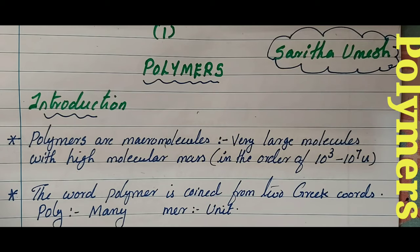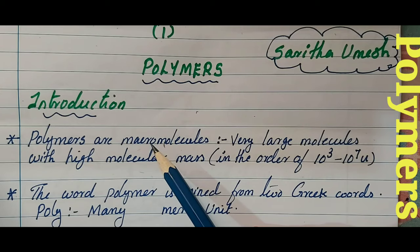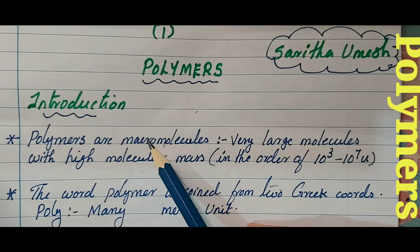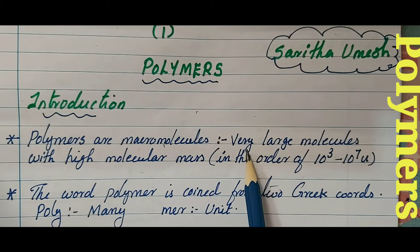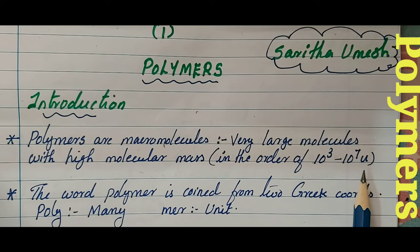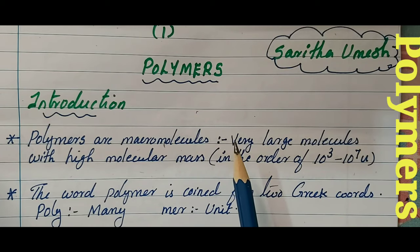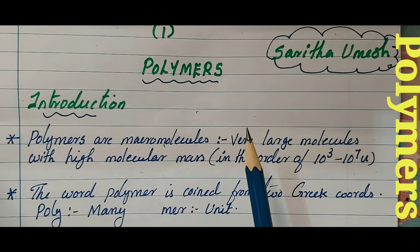What are polymers? Polymers are macromolecules. The word 'macro' means big, so polymers are very large molecules with high molecular mass in the order of 10³ to 10⁷ u, where u means unified mass.